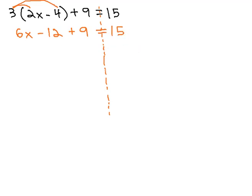Often after distributing, we'll have a situation where we have like terms on one side of the equation. Let's go ahead and combine these like terms, so there's fewer things we have to deal with. That will give us 6x minus 3, equals 15. And you'll notice after doing this, we now have a two-step equation.